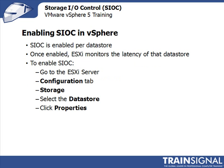Enabling SIOC is done on each datastore in the virtual infrastructure. Once enabled, the ESXi servers will monitor the latency of that datastore. When latency reaches a certain threshold, those servers begin to throttle Storage I.O. requests based on the share values assigned to each virtual machine. To enable SIOC, go to the ESXi server's Configuration tab, into Storage, select the datastore, click Properties, and check the checkbox to enable SIOC.